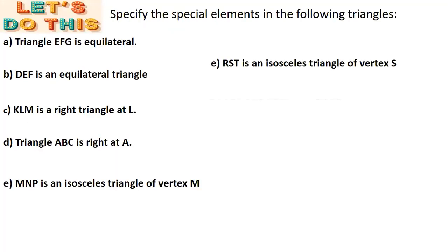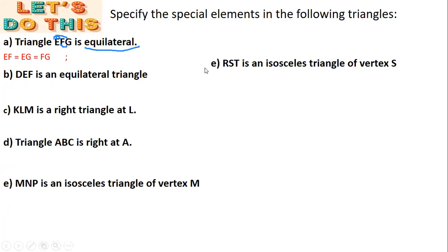Now let's practice the exercise: specify the special elements in the following triangles. Part A — triangle EFG is equilateral. I stop at the word equilateral and ask myself what it means: three equal sides and three equal angles. Now let's name the equal sides starting from E: EF is the first side, EG is the second side, and FG is the third side, so EF = EG = FG.